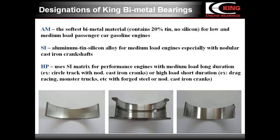Here you can see the main grades of King bimetal bearings and their designations. The first material is AM, the softest bimetal material, containing 20% of tin, 1% of copper, and no silicon. AM bearings are used in passenger cars with low and medium load gasoline engines. SI is the silicon-containing material for medium load gasoline engines, particularly engines using nodular cast iron crankshafts. And HP is the silicon-containing material for medium load high performance engines with nodular cast iron crankshafts, and also for high load short duration engines.